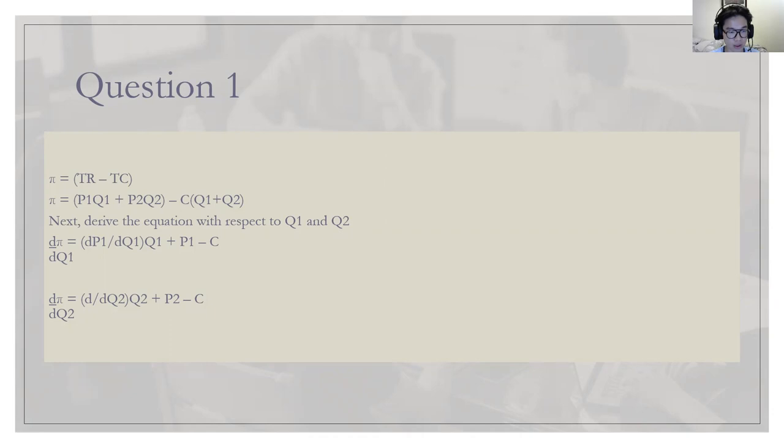We derive the profit function with respect to q1 and q2. dπ/dq1 equals this value, found by expanding d/dq1 to each respective variable, giving us dp1/dq1 times q1 plus p1 minus c. Same goes for dπ/dq2: we have d/dq2 times q2 plus p2 minus c.